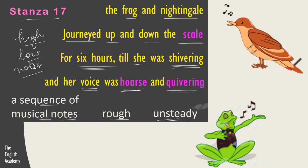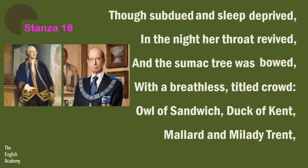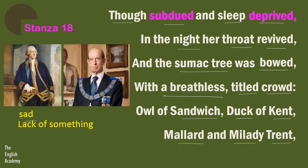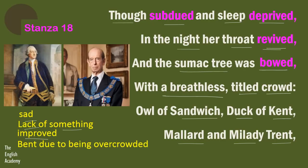The next stanza: 'Though subdued and sleep deprived, in the night her throat revived. And the sumac tree was bowed with a breathless, titled crowd, owl of sandwich, duck of Kent, millard and milady Trent.' Subdued means sad, depressed, feeling low. Deprived means lack of something. Revived means improved, regained its strength. Bowed means bent forward due to being overcrowded.